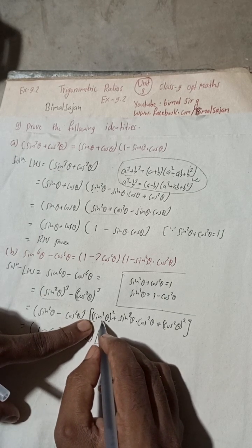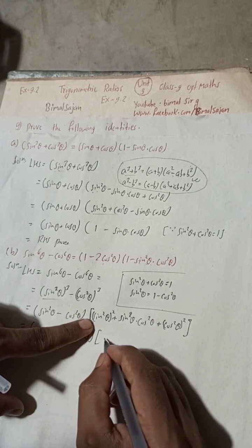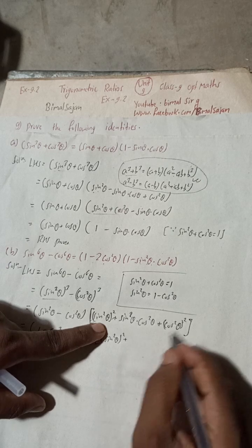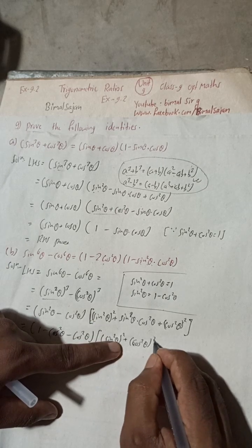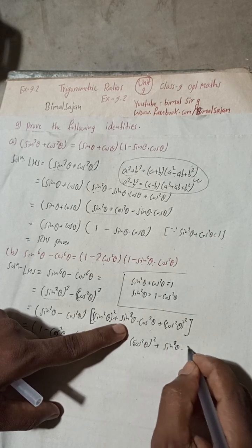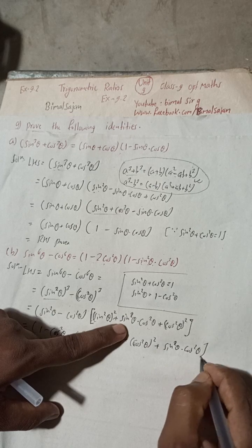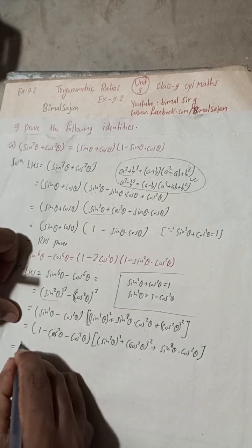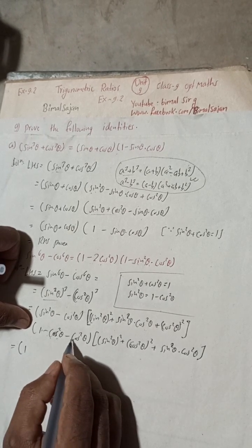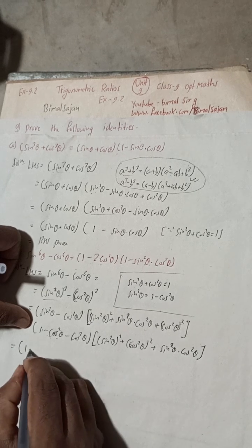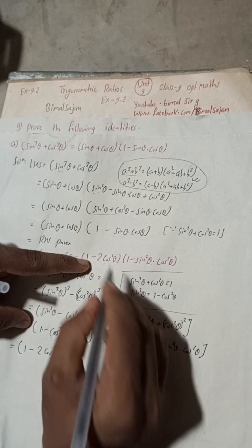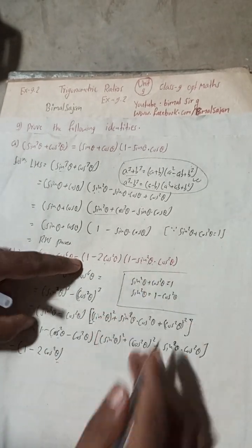The second bracket remains as sin⁴θ + cos⁴θ + sin²θ·cos²θ. For the first bracket: 1 − cos²θ − cos²θ = 1 − 2cos²θ. So this part is obtained. Now to simplify the second bracket we need to work further.